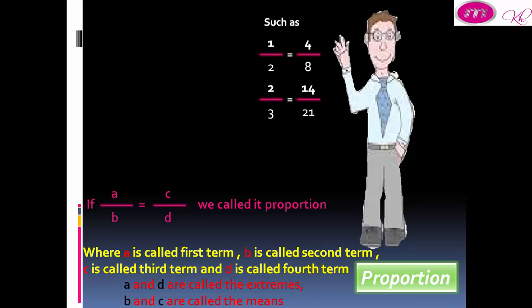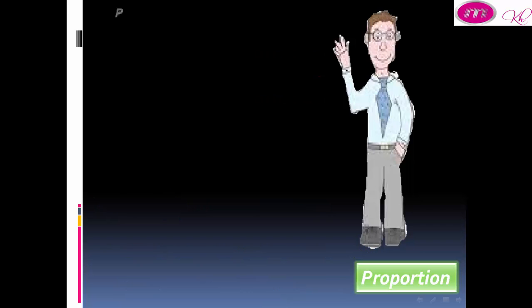Such as one-half equals 4 over 8, two-thirds equals 14 over 21. It is Proportion.